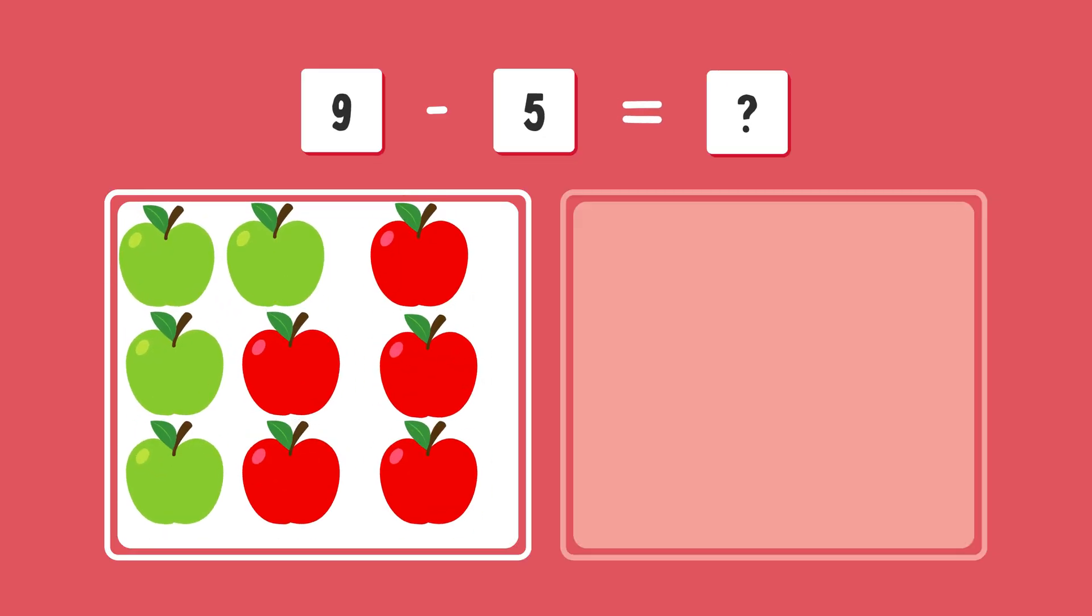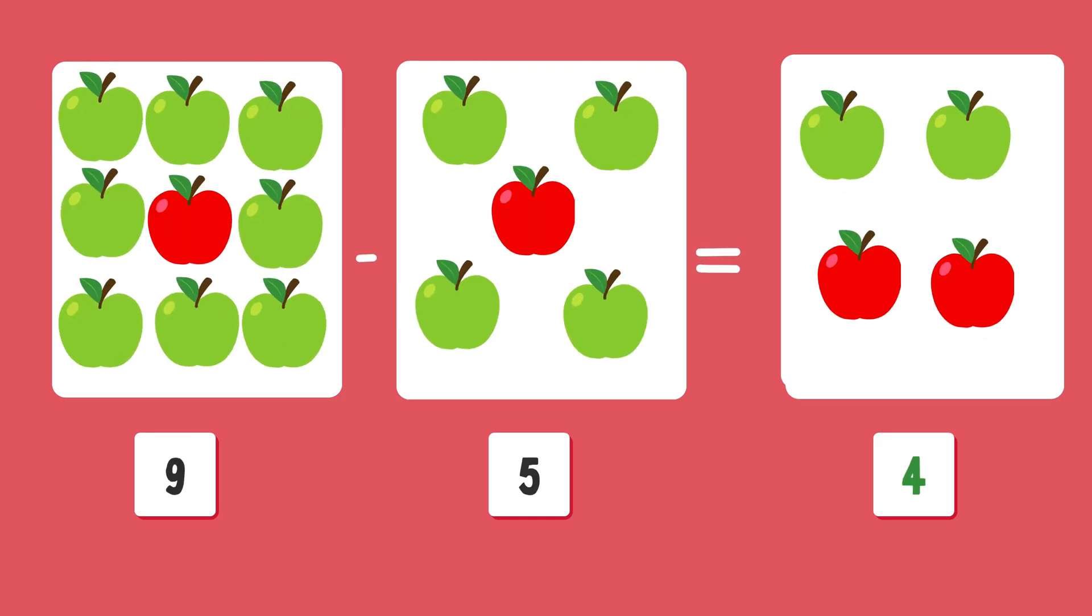And finally, what is nine minus five? You did it. Correct answer is four.